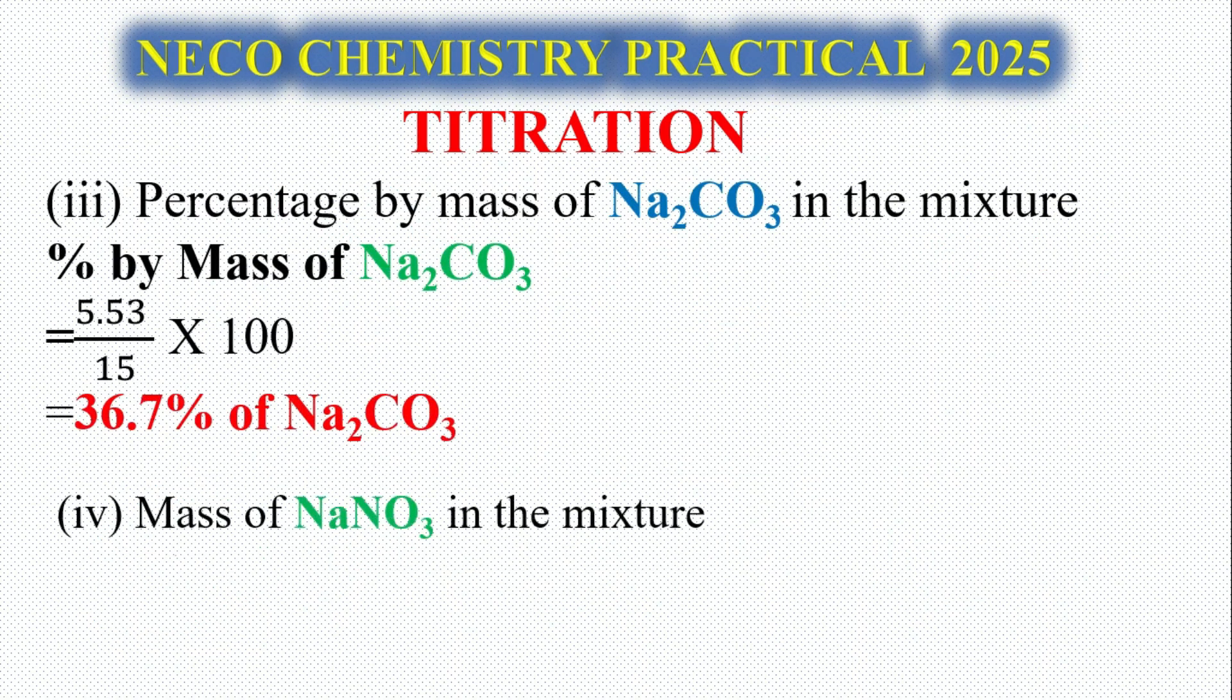Percentage by mass of Na2CO3 in the mixture: you already have the mass of Na2CO3 to be 5.53, multiply by 100, divide by the total mass of the mixture which is 15, that gives us 36.9% of Na2. The mass of NaNO3 in the mixture: 15 minus the mass of Na2CO3, you are going to have 9.47 grams per dm³ of NaNO3.